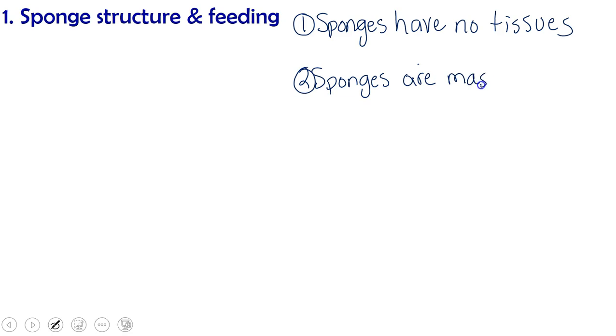So let's take a look at sponge structure and feeding. First thing to know about sponges is that sponges have no tissues. They are instead a mass of colonial cells with different functions. So they are a mass of colonial, so same genes, clones of each other, yet differentiated, meaning they've got different functions and structures.